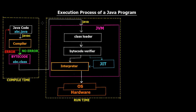Starting with the first small yellow rectangular box — here we have our Java code. This is step one, where we actually type our Java code. You can see I have typed abc.java, so abc.java is our Java source file. For step one, we write our Java code and save it as a .java file.